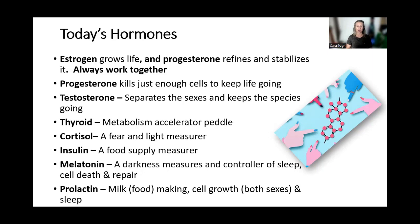Melatonin is a darkness measurer and a controller of sleep, but it also controls cell death and repair. It's both a hormone of light and of darkness, because melatonin can carry light, store it, and then release it again later in the night.